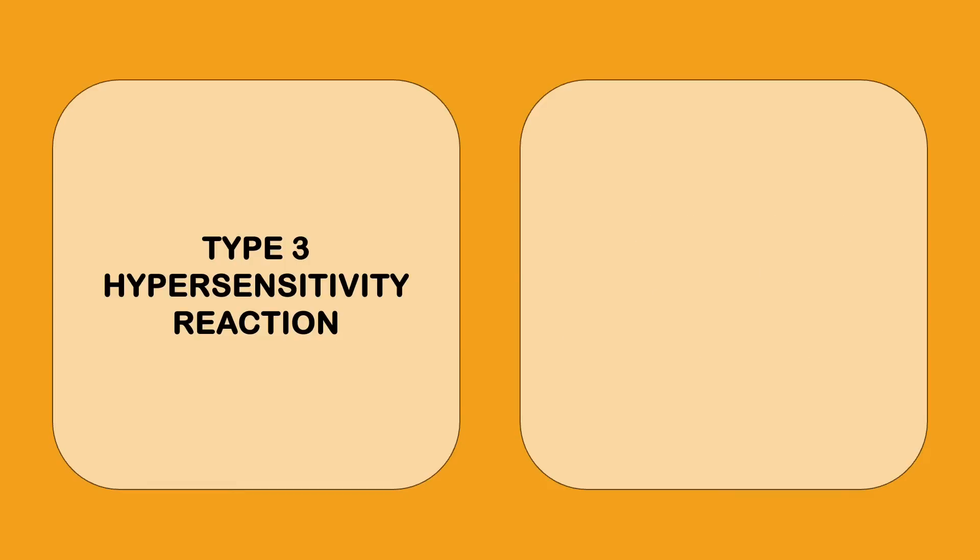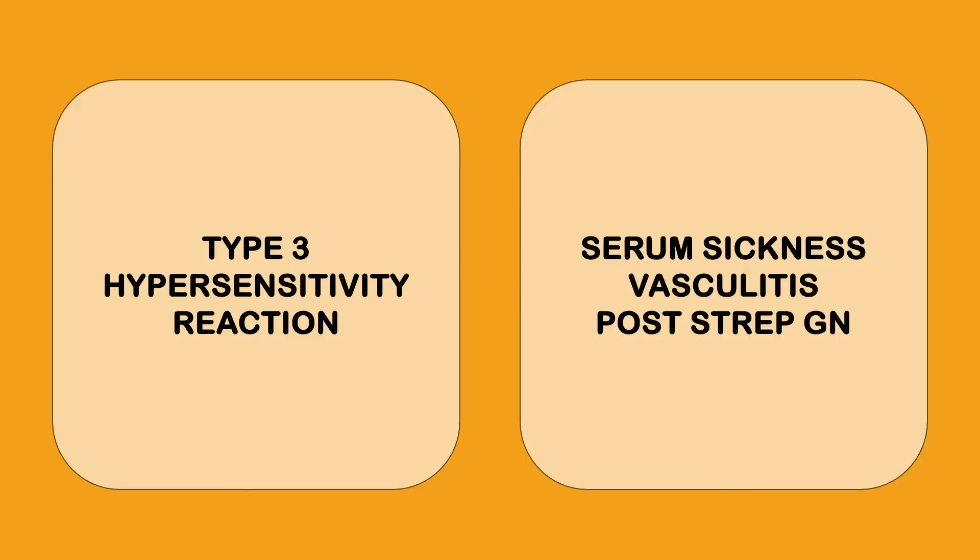Type 3 is an antigen-antibody immune complex reaction. So there are three things over here and this is your serum sickness, vasculitis, post-streptococcal glomerulonephritis. Serum sickness, vasculitis, any kind of vasculitis, giant cell arteritis, Kawasaki's, these are all vasculitis, is type 3 and post-streptococcal glomerulonephritis.